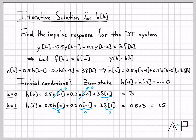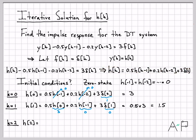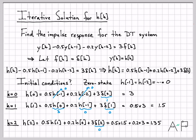For K equals two, we replace all K's and get H of two equals 0.5 times H of one, plus 0.2 times H of zero, plus three times delta of two. Plugging in: 0.5 times 1.5 plus 0.2 times three, and the delta term is zero since its argument is non-zero. That gives H of two equals 1.35.